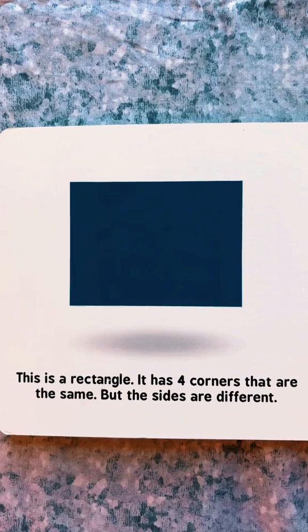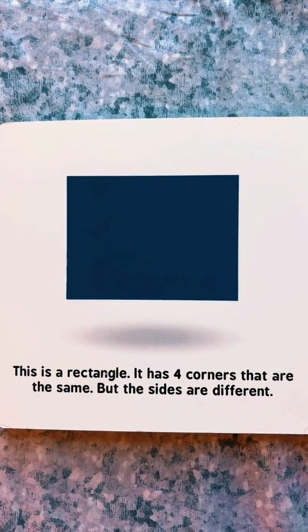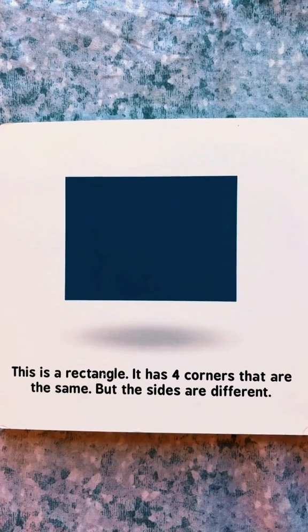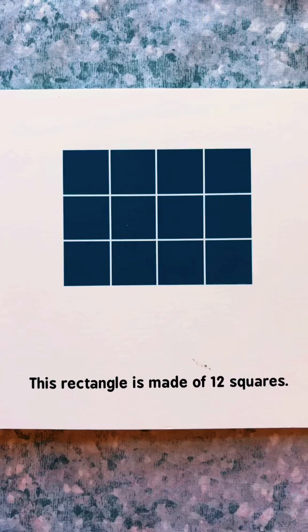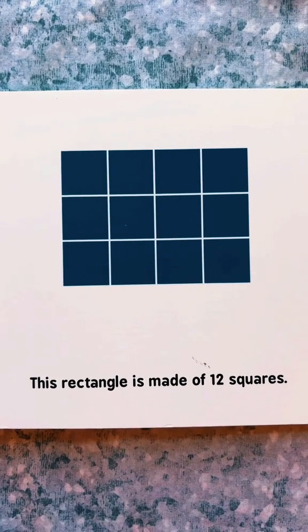This is a rectangle. It has four corners that are the same, but the sides are different. This rectangle is made of twelve squares.